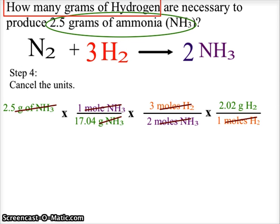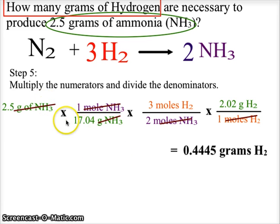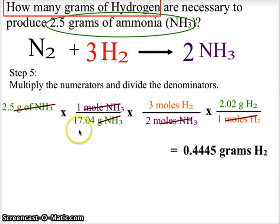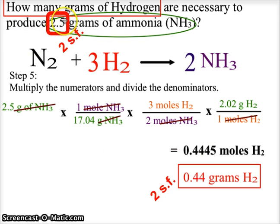Now we cancel our units, and the final remaining unit is grams of hydrogen, which is what the question asks us to find. For the calculation, we multiply the values on top — 2.5 times 3 times 2.02 — and divide by the values on the bottom — 17.04 divided by 2. That gives a value of 0.4445 grams of hydrogen. Since the question only has two significant figures, we round to two significant figures, giving a final answer of 0.44 grams of hydrogen. Hopefully these two examples of gram-to-gram stoichiometry will help you.